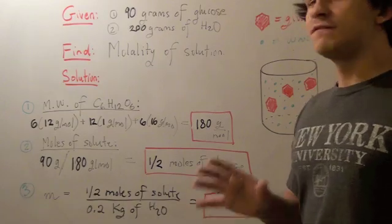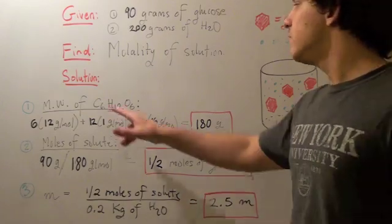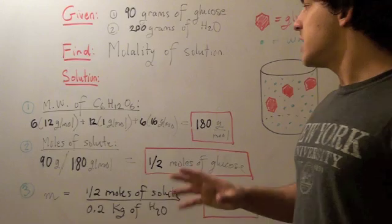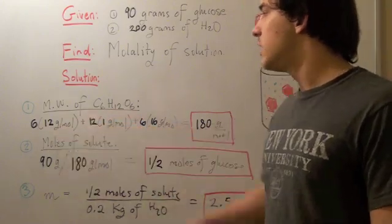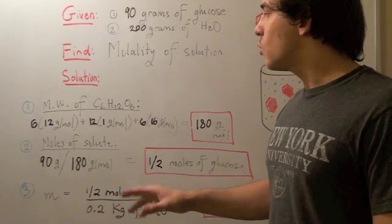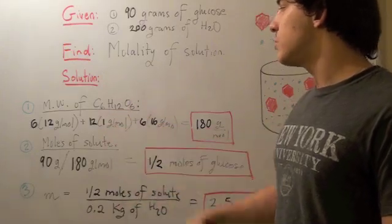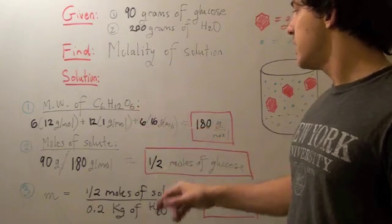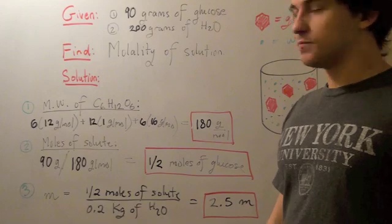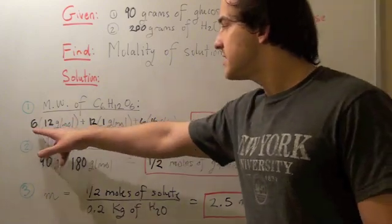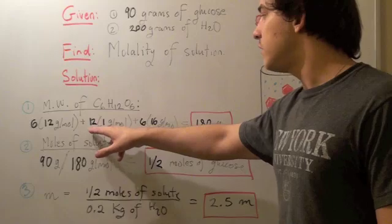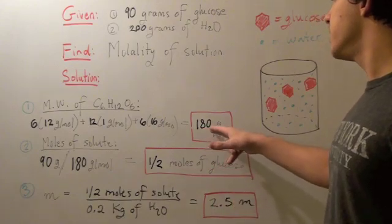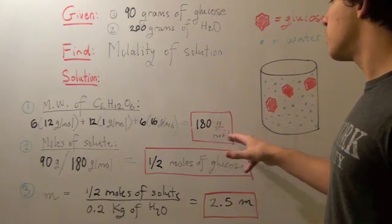To find the molecular weight, we find the atomic weight of each atom and multiply it by each subscript. The atomic weight of carbon is 12 grams per mole, the atomic weight of H is 1 gram per mole, and the atomic weight of oxygen is 16 grams per mole. So we multiply 6 by 12, add that to 12 times 1, and add that to 6 times 16, and we get approximately 180 grams per mole.